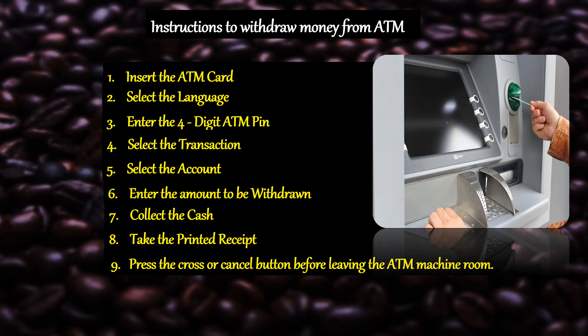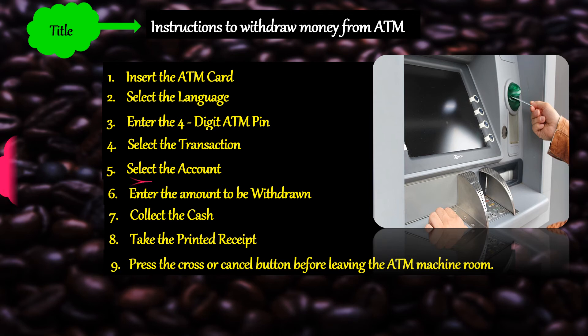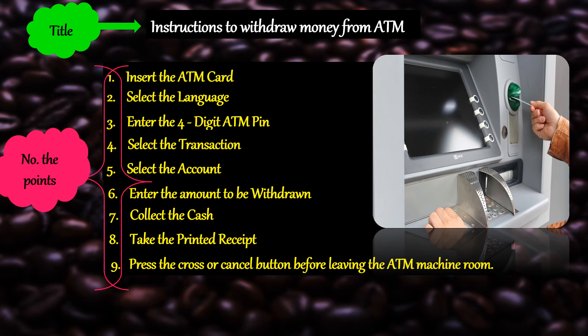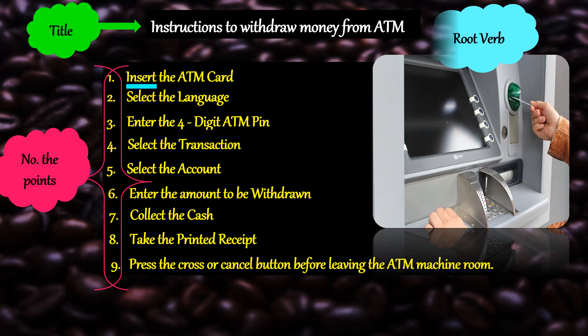Let's see whether we have satisfied the rules for writing instructions. We gave a precise and specific title, numbered the points, and once you start writing the points, you begin with a root verb. This is the step-by-step process for how to withdraw money from an ATM.